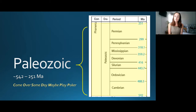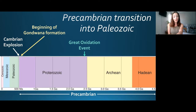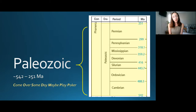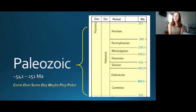The Precambrian goes from 4.5 billion years ago to 542 million years ago, accounting for most of Earth's history. The Paleozoic went from 542 million years ago to around 251 million years ago, and this era included the Cambrian, Ordovician, Silurian, Devonian, Mississippian, Pennsylvanian, and Permian periods. A mnemonic to remember the order: 'Come Over Someday Maybe Play Poker' — my geologist mom taught me that.